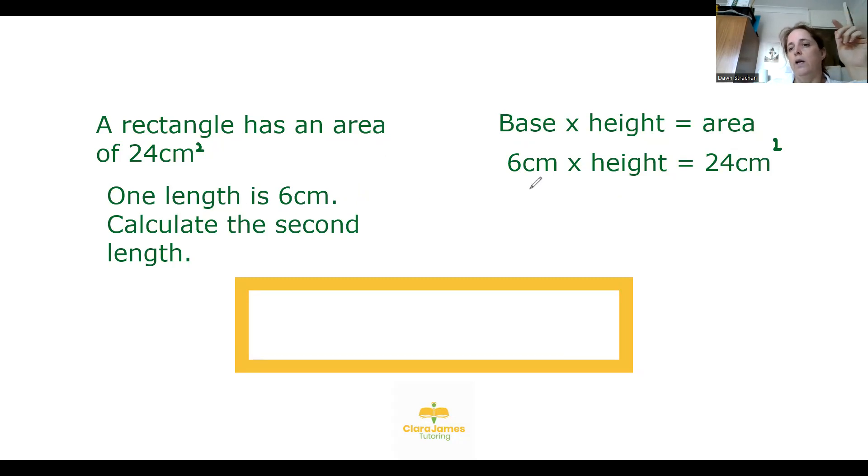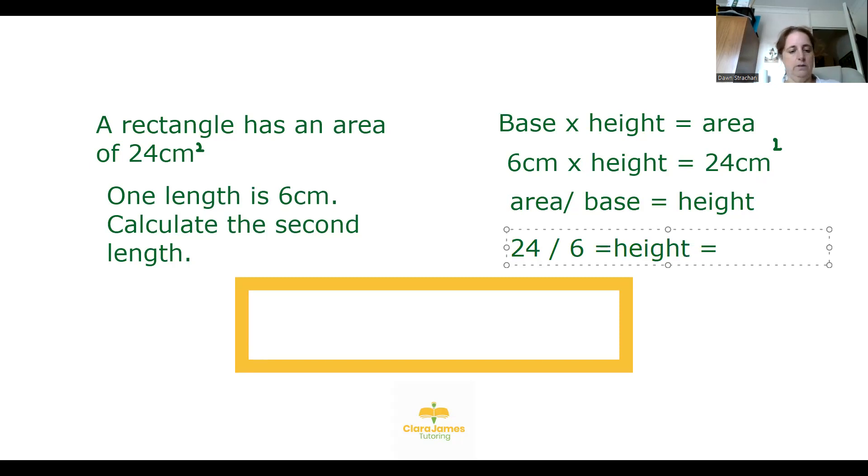So now I know that 6 centimeters times the height equals 24, so all we need to do now is area divided by base equals height. 24 divided by 6 equals height, and that equals 4. So the height of our rectangle is going to be 4 centimeters. I hope that makes sense so far.